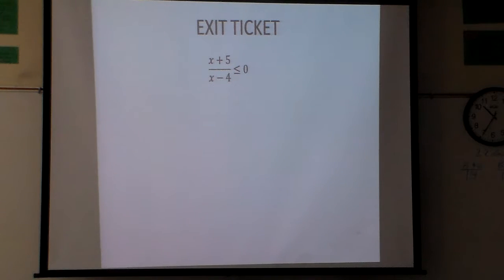So all I need to do is find the zeros. First off, I'm going to set the top one to zero: x plus 5 equals 0, which means x equals negative 5. And here, if I set x minus 4 equals 0, it means x equals 4.